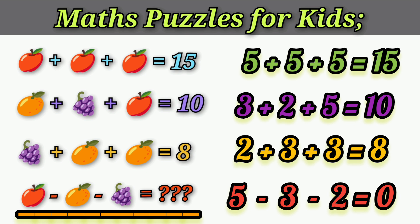5 minus 3 minus 2 equals 0. So the answer to apple minus orange minus grapes is 0. This is the easy solve method for maths puzzles for kids — the correct answer is 0.